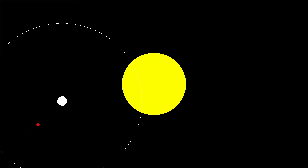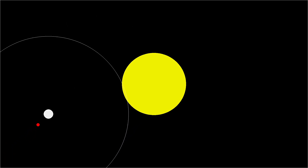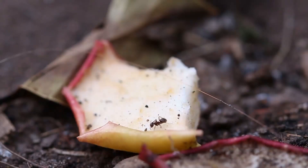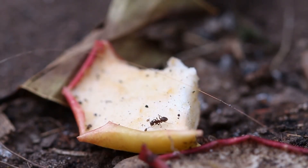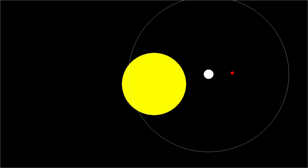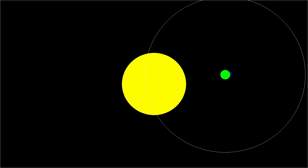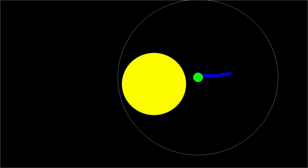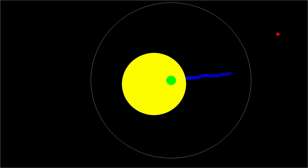Now that we have the basics ready, we can start to introduce some logic. In the real world, ants use pheromones to communicate with each other, so we're going to simulate something similar. Now when an ant finds food, it's going to start leaving pheromones on its way back to the anthill.